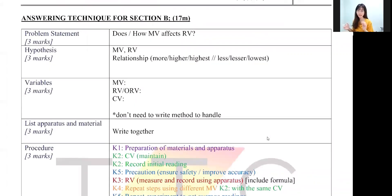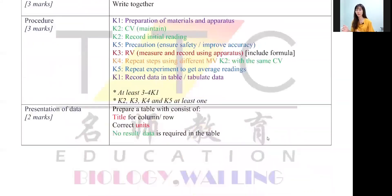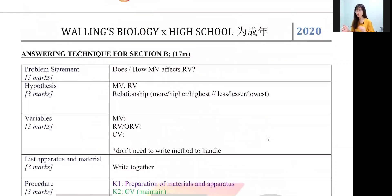In Section B, in total we have 17 marks. These 17 marks come from six questions. All of the questions give you three marks, besides the last question — the last question is two marks.